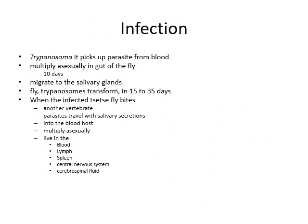Regarding Trypanosoma infection: the tsetse fly picks up the parasites from the blood and the parasite multiplies in the gut of the fly for about 10 days, then migrates to the salivary glands. Within 15 to 35 days the Trypanosoma transforms inside the fly, and when the infected tsetse fly bites another vertebrate, the parasite travels with salivary secretions into the blood of the host, where it multiplies and then lives in the blood, lymph, spleen, central nervous system, and cerebrospinal fluid.